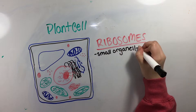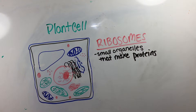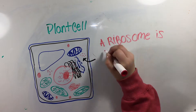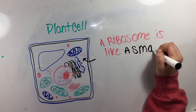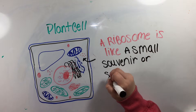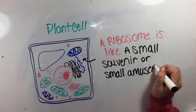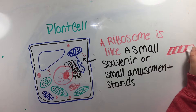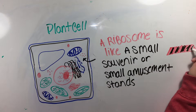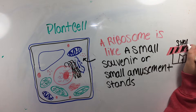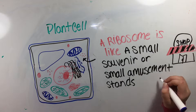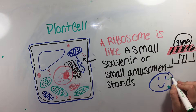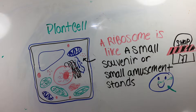Ribosomes are small organelles that make proteins. They are like small areas within the zoo such as a souvenir shop, face painting stands, and small rides. These small areas produce entertainment, joy, and happiness to children and adults. The small areas of amusement are needed to keep the people at the zoo content with their visit, just like how ribosomes create protein to keep the other organelles content.